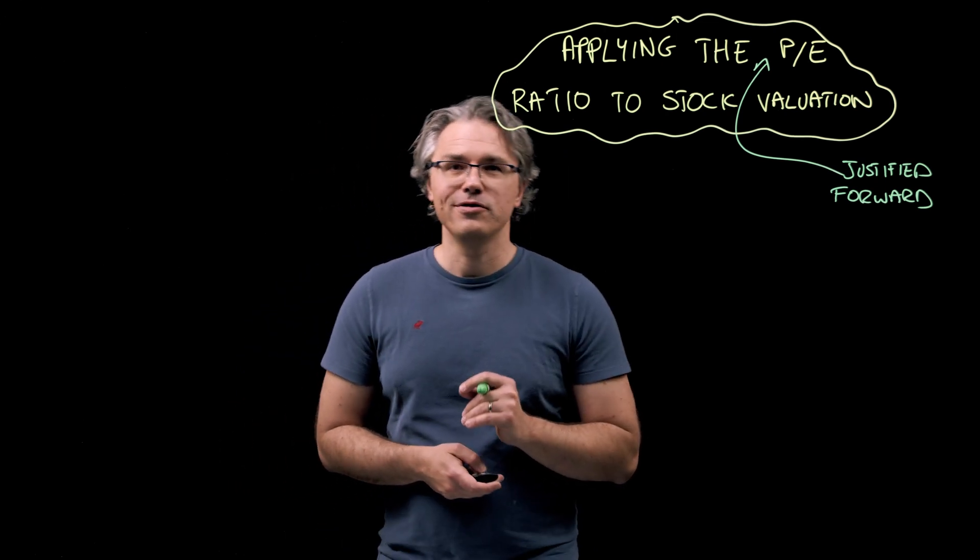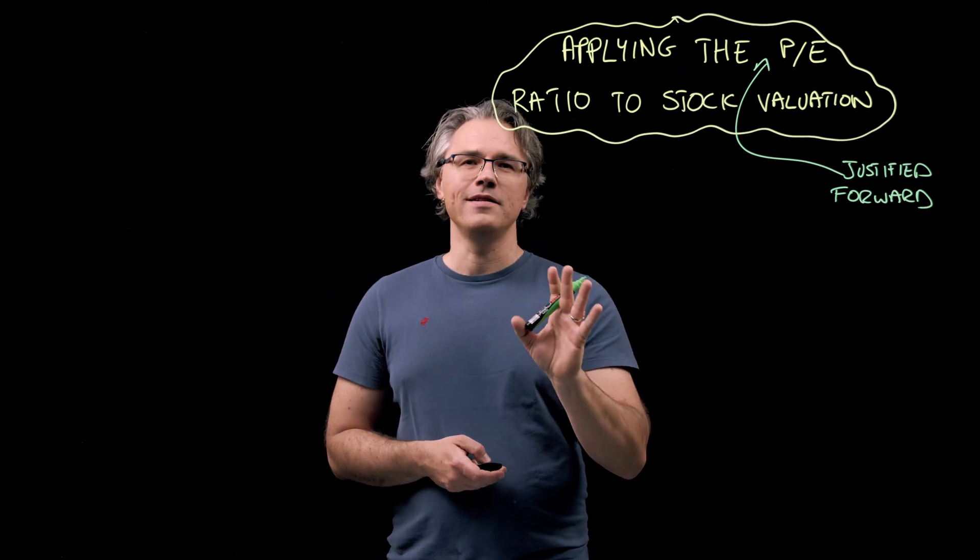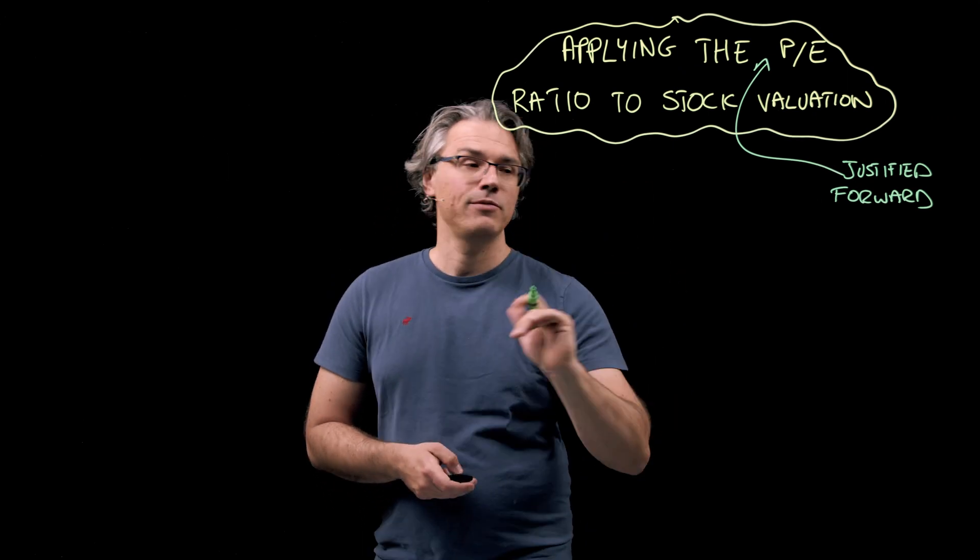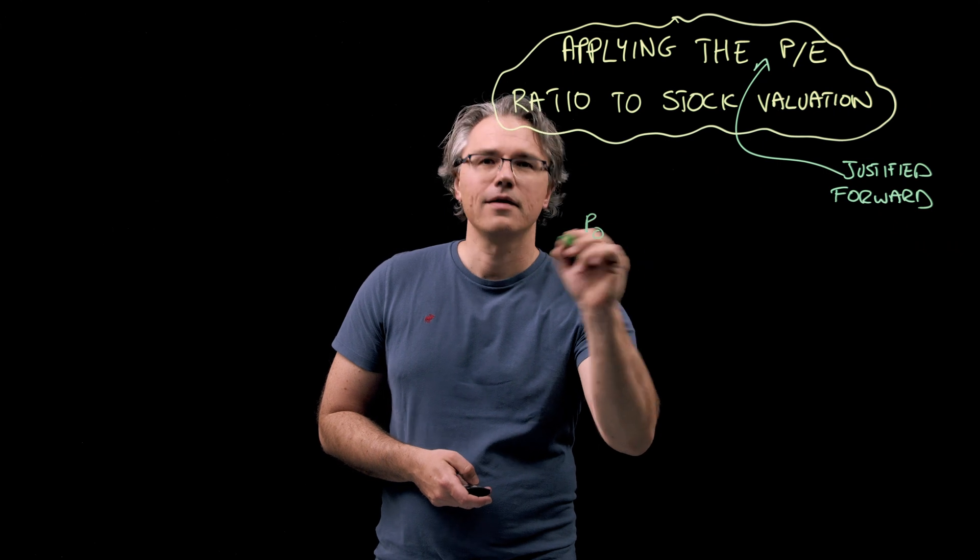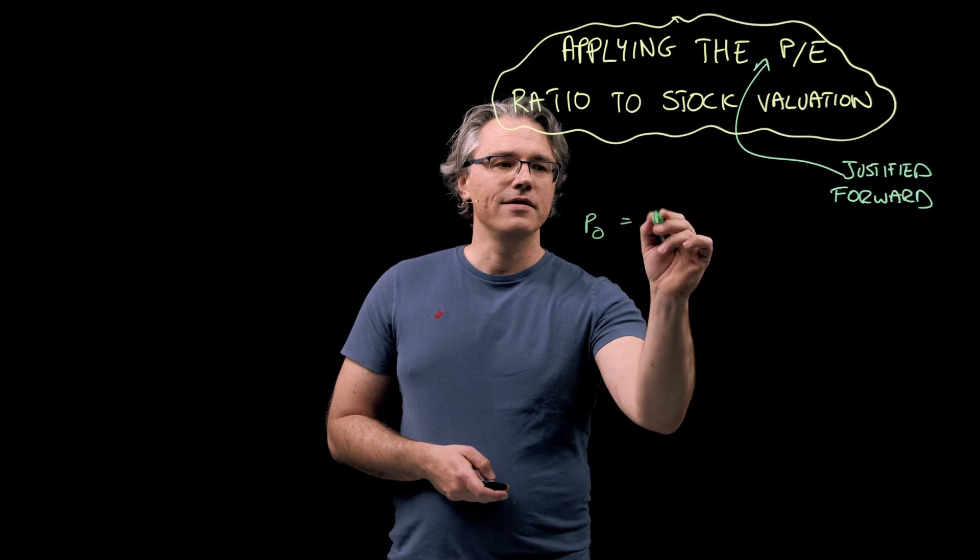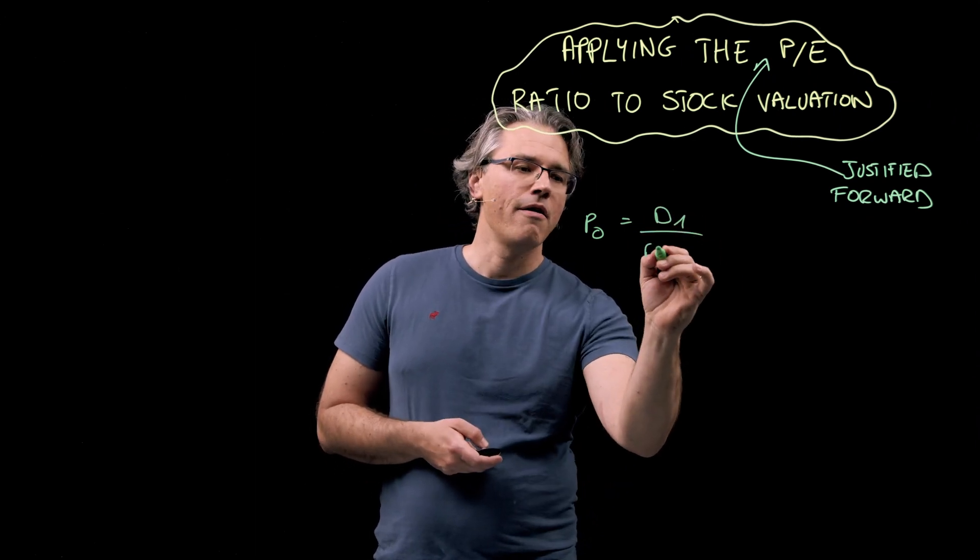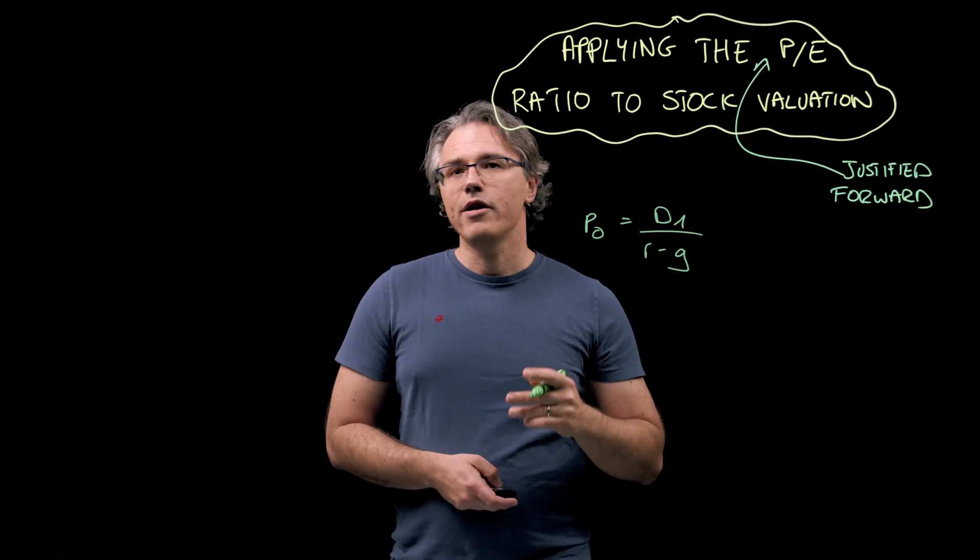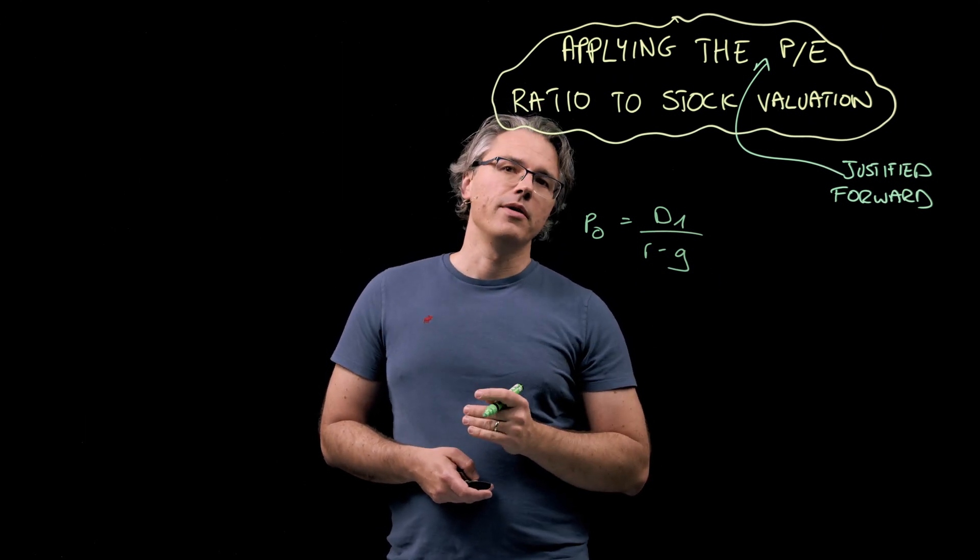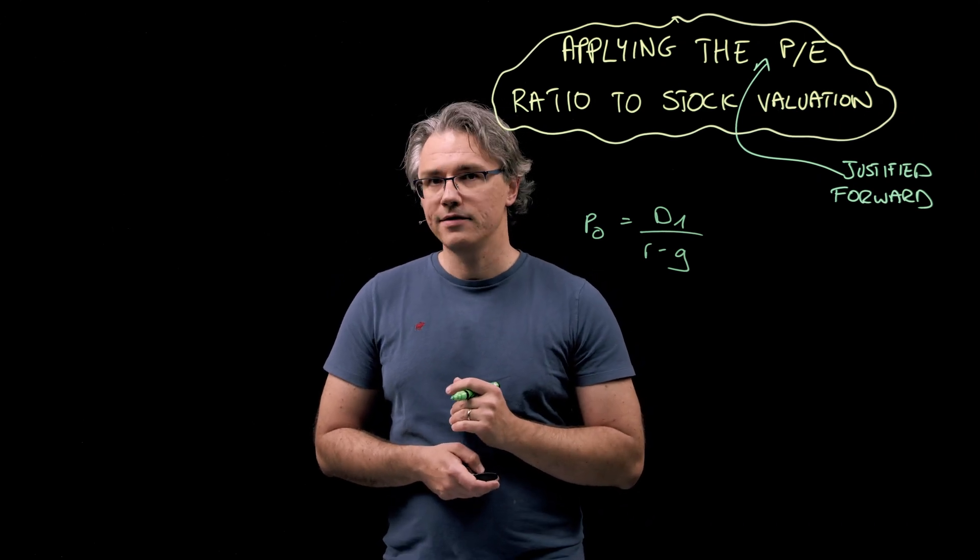The value of a stock today at time zero, which we would traditionally note as V0, which I am now substituting for P0, that's the price of a stock, equals the dividend expected next period, D1 divided by R minus G. Where R is the rate of return required by investors and G is the constant rate of dividend growth.